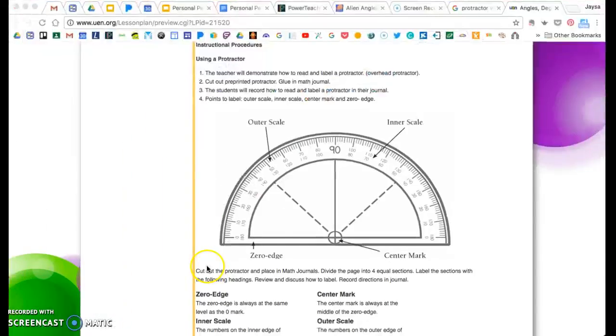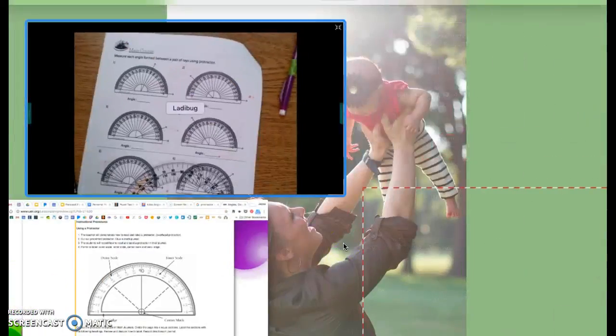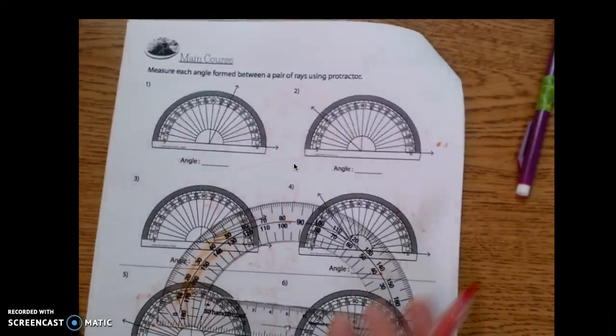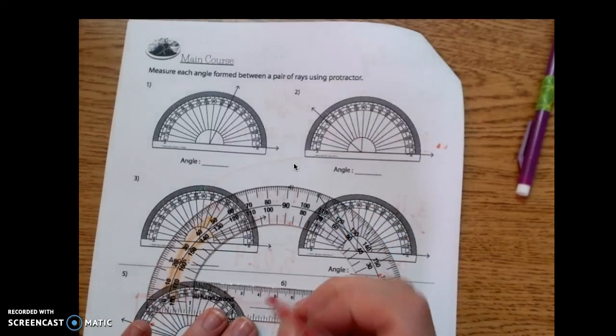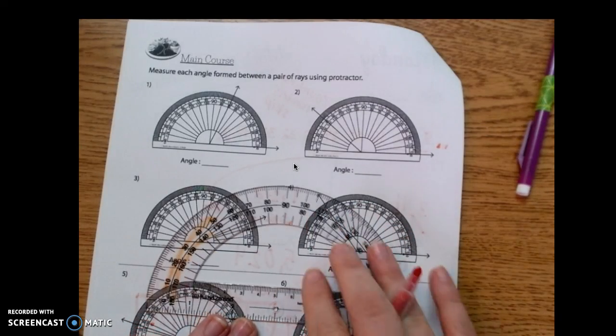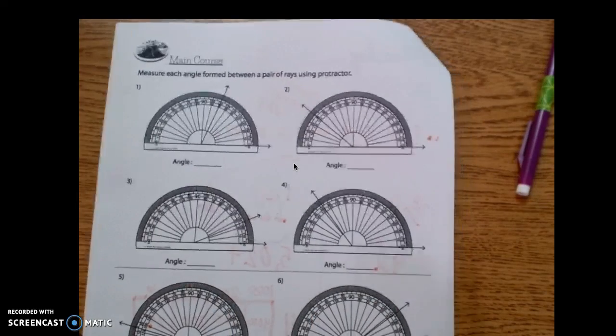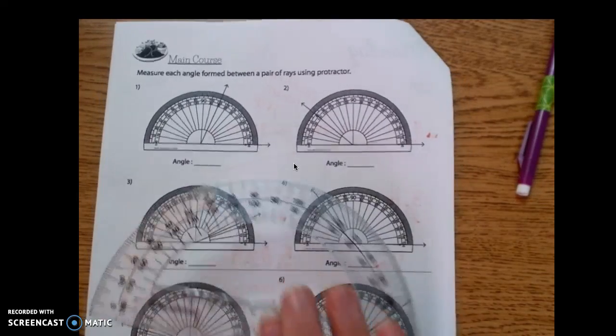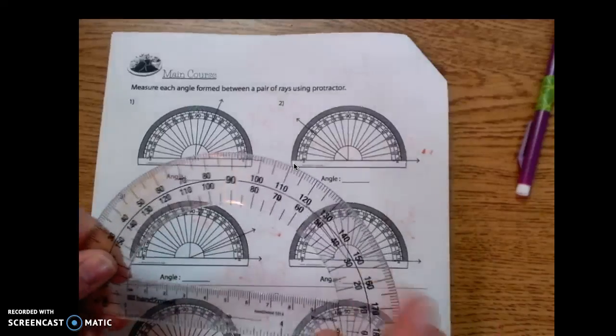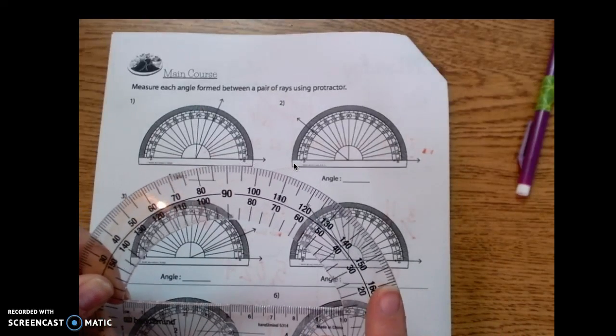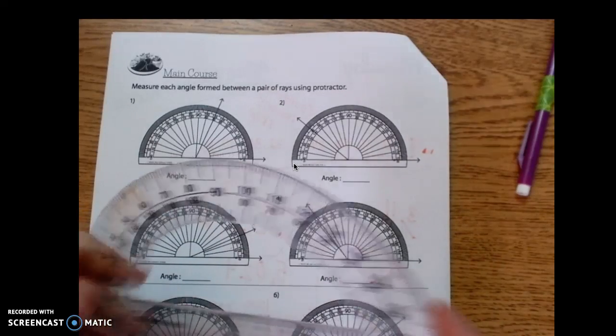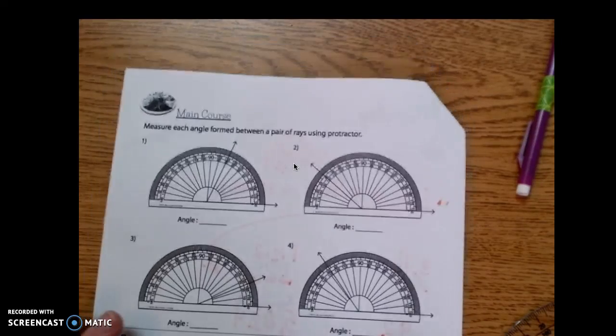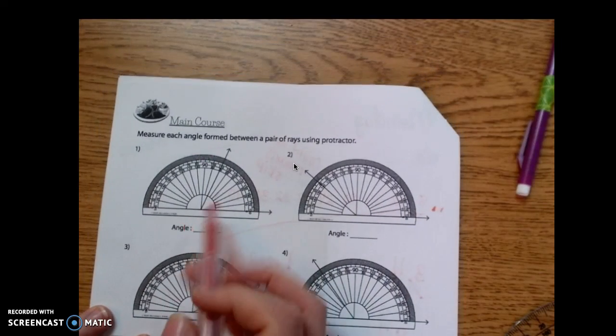So the next thing that we have is the center mark. I'll show you my center mark. The center mark is just going to be that hole right there. That is the center mark. Remember that as we are measuring angles, we actually are not even going to be using this today. We're just going to practice reading. So you don't even need a protractor today.